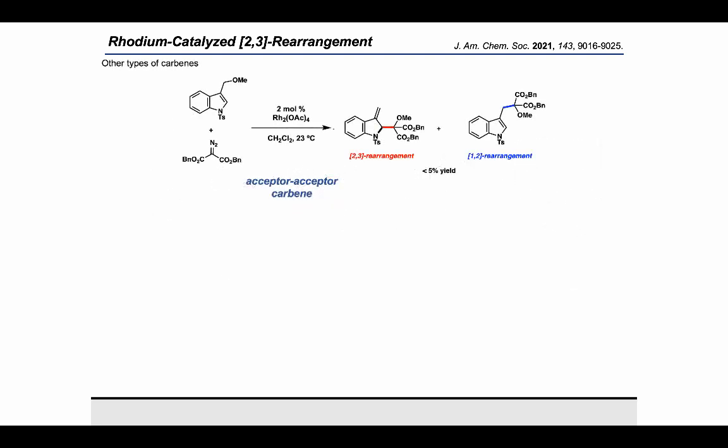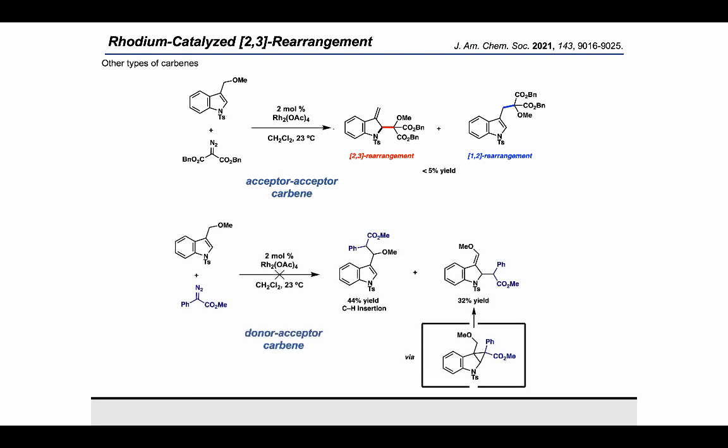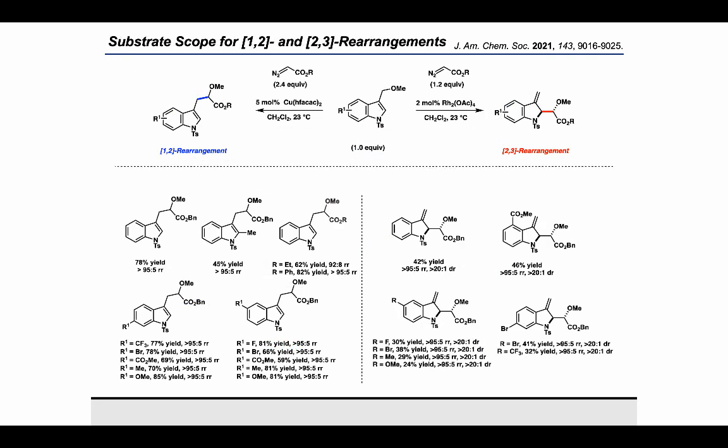We did try a variety of other conditions with different rhodium catalysts and solvents, but we did not observe any improvement in yields. We also tried other diazo compounds such as a diester that forms stabilized acceptor-acceptor type carbenes, which did not show any reactivity under our conditions. And when we tried diazo compounds that form donor-acceptor carbenes, ylide formation was suppressed by competing C-H insertion and cyclopropanation pathways. With the optimized conditions for both 1,2 and 2,3 rearrangements established, we decided to look at the substrate scope of this regiodivergent approach. In terms of the 1,2 rearrangement, we were able to show the applicability on a variety of electron-rich and electron-poor indole substrates, as well as other alkyl and aryl ethers. For the 2,3 rearrangement, yields were comparatively lower as expected, but we were excited to see that all substrates showed high levels of regio- and diastereoselectivity.